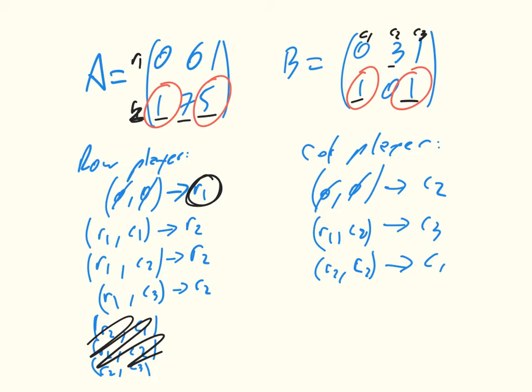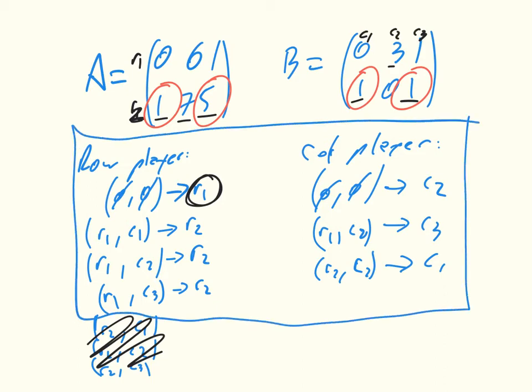Now, this is a bit of a mouthful, but it is the mathematical representation of essentially saying that both players start by playing R1 and C2, so start here. And as long as the row player cooperates, then the column player will play C3. Now, the way we can see this is we know that the last move has to end at a Nash equilibrium. So we know the last move will end up here, here, or here.